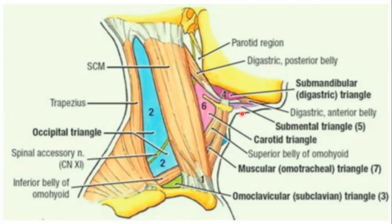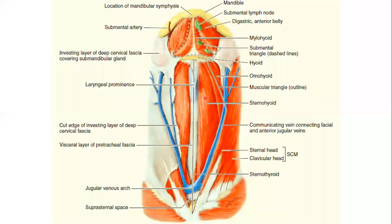We are discussing the submental triangle. The base of the submental triangle is formed by the hyoid bone, and the apex lies at the symphysis menti — the median line of the mandible. Laterally, the boundaries are the two digastric anterior bellies, one on each side. This is the only single, medial triangle in the body; the rest of the three are paired, on each side of the neck.